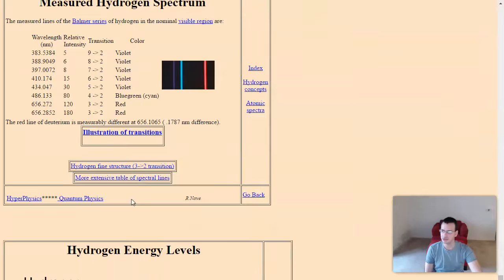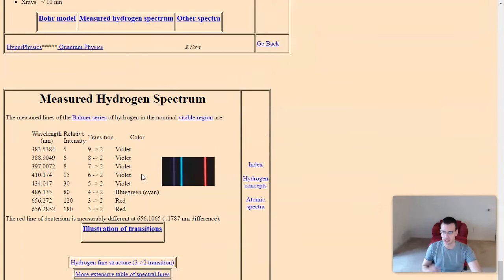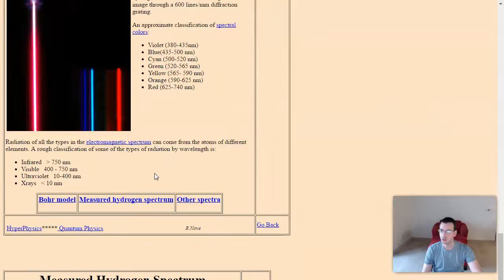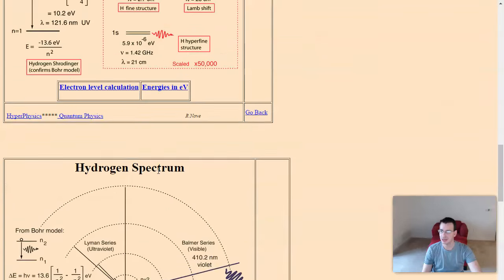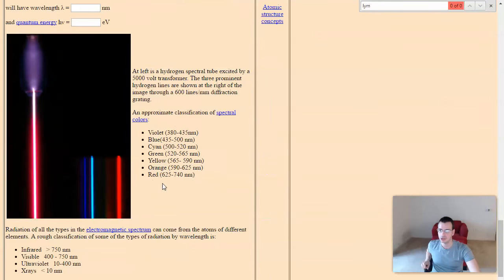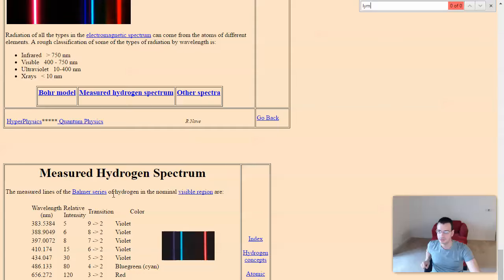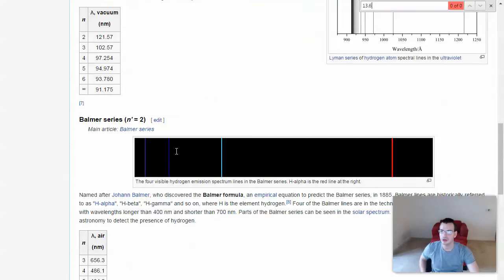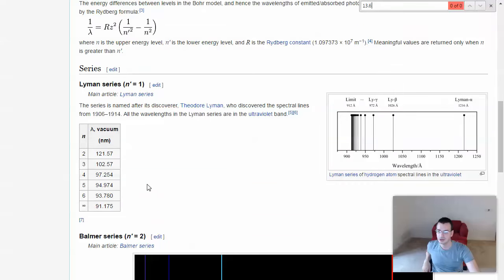Balmer series. So, there's like different series. There's like the Balmer series. I think there's like a Lyman series, which is where it goes from 1. So, I'm going to go with a Lyman series first. Is that a Lyman? If I go to the Balmer series, it'll show up. Balmer? Here we go. Here's the Lyman series.